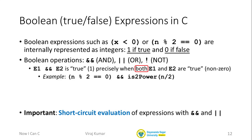There are other reasons to write code this way. Suppose we want to check two conditions, but we don't want to check the second condition unless the first is true — maybe checking the second condition would actually cause an error unless the first is satisfied. In that case, you can use the AND operator and take advantage of short-circuit evaluation: it will not evaluate the second expression unless the first is true.